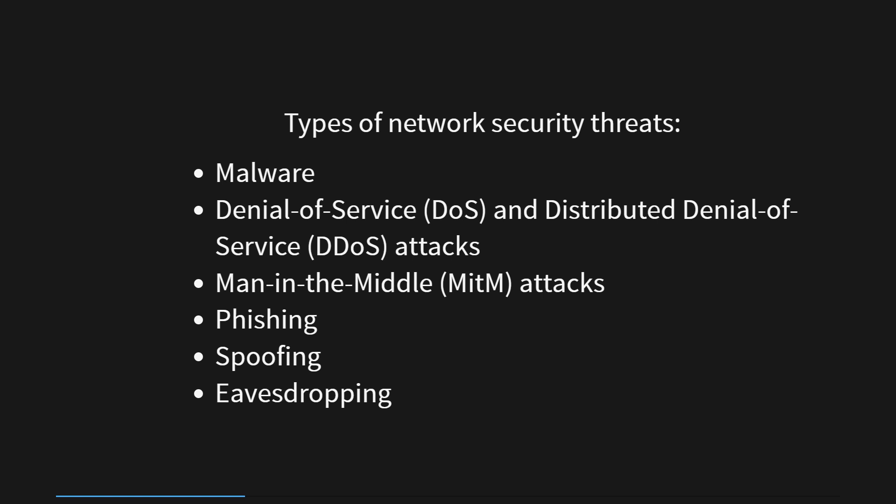Spoofing, particularly IP spoofing, involves forging a trusted source's IP address to gain unauthorized network access. Lastly, eavesdropping, or unauthorized interception of network traffic, is utilized to clandestinely gather sensitive information. It is crucial for organizations and individuals to remain vigilant and implement robust network security measures to counter these threats effectively.